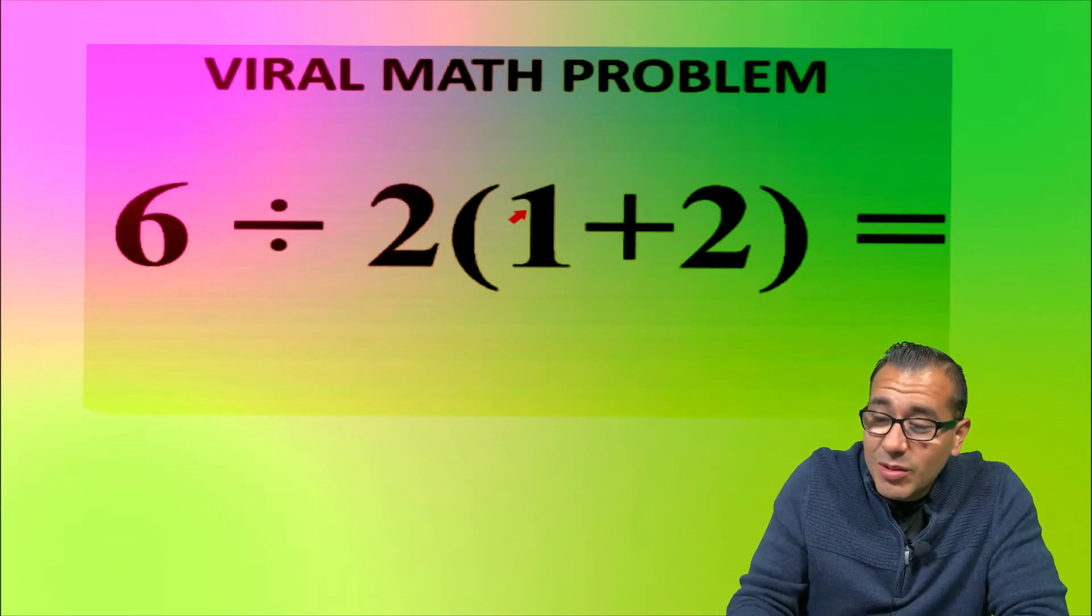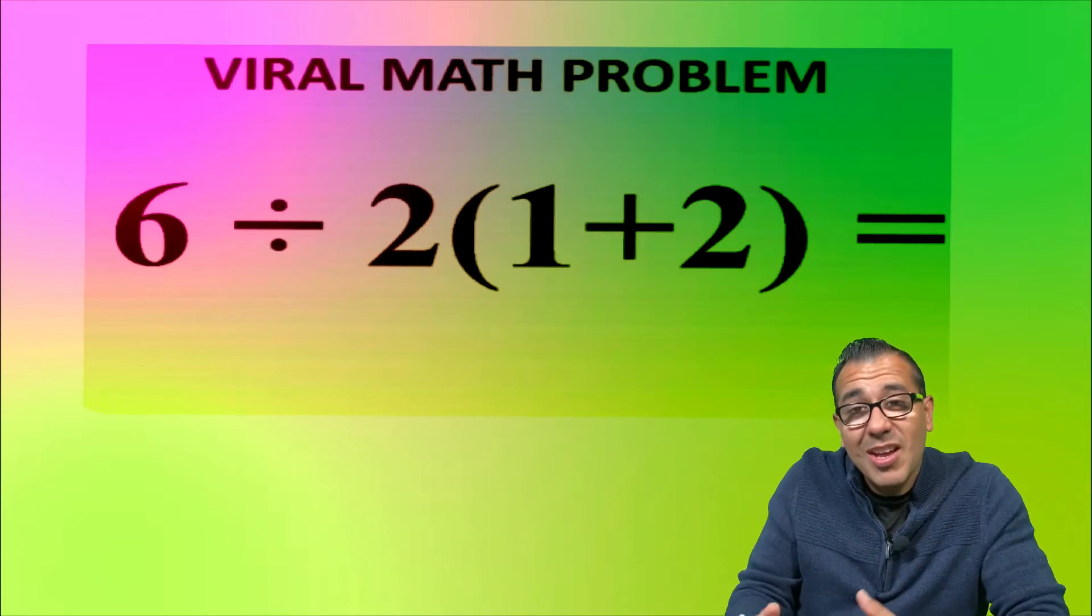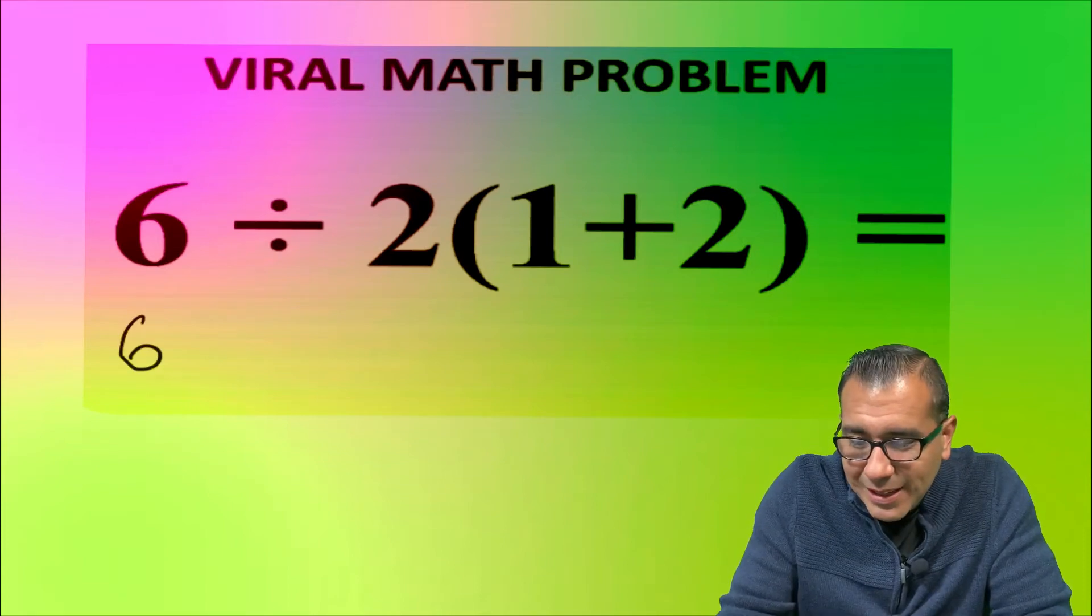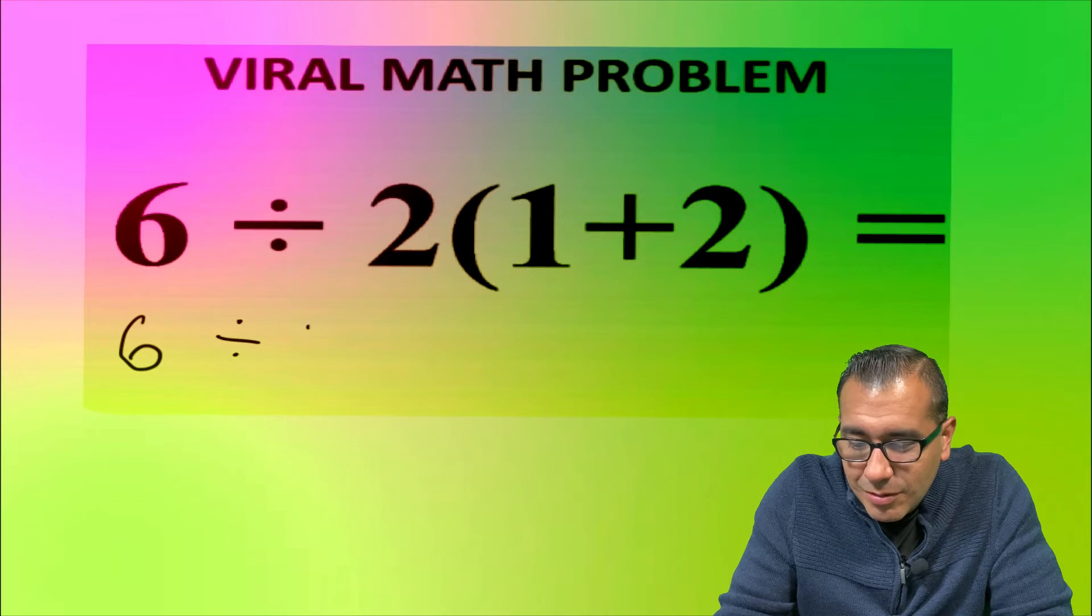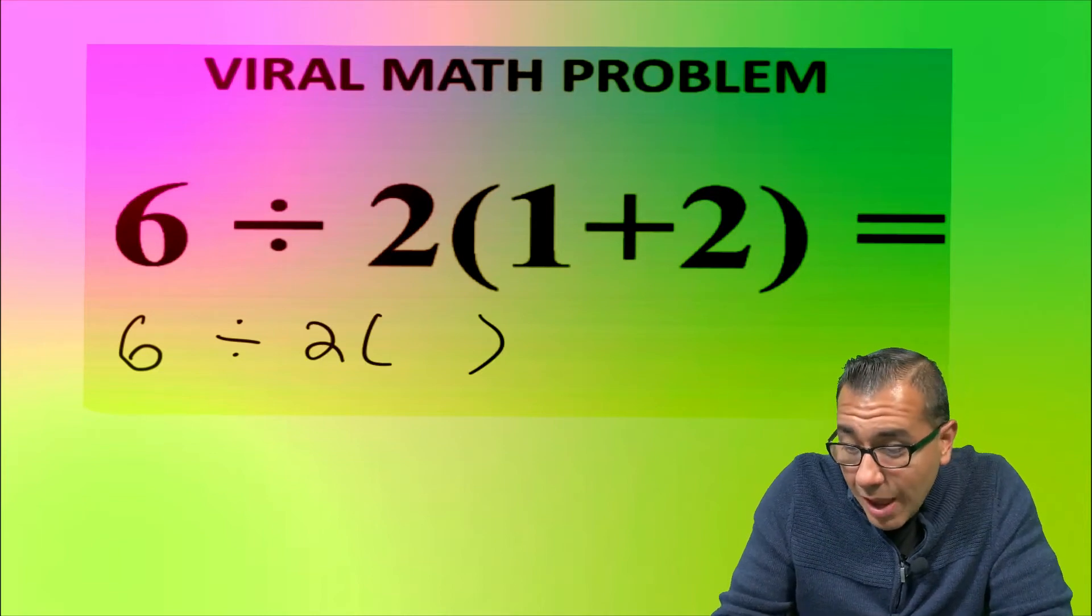So what we're gonna do is we're gonna do the inside first. Everything else, you're gonna drop it like it's hot. Don't touch that six. Drop it like it's hot: divided by two. Keep your hands off of that—we're not doing anything there yet. One plus two is three.